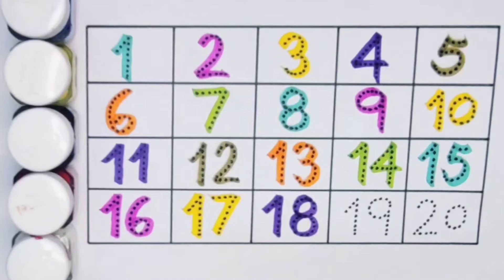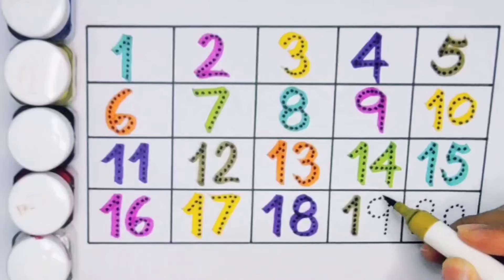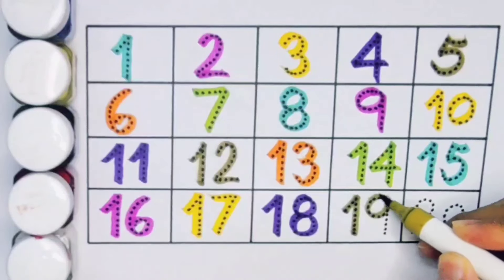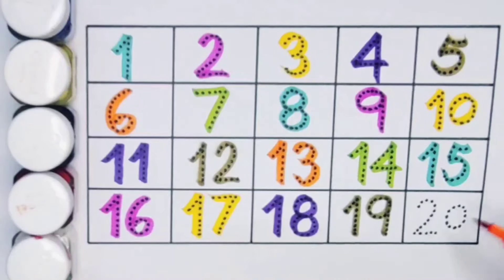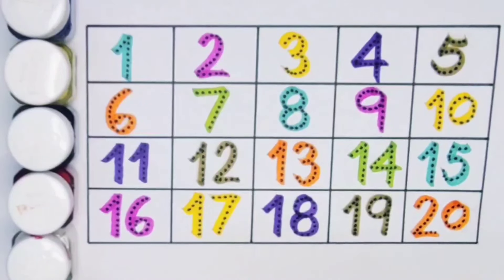Next kids 19, 1, 9. Number 19. Next kids 20, 2, 0, 20. Number 20. What we learn?